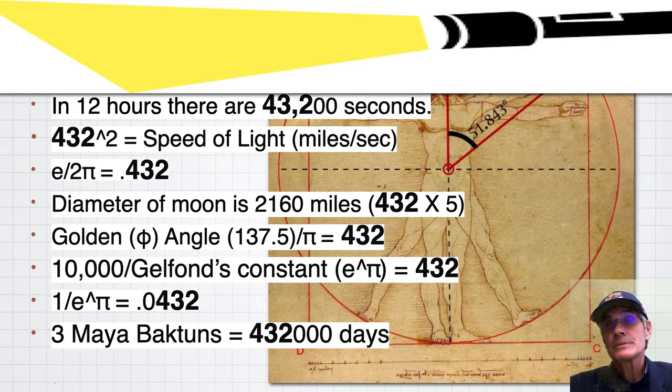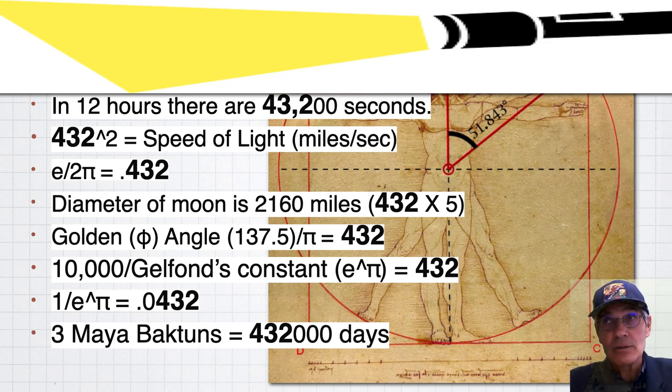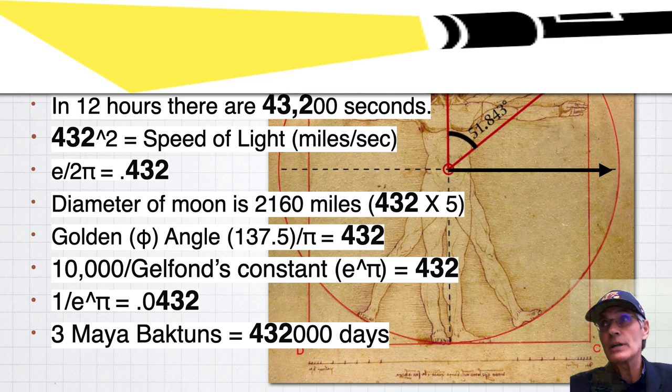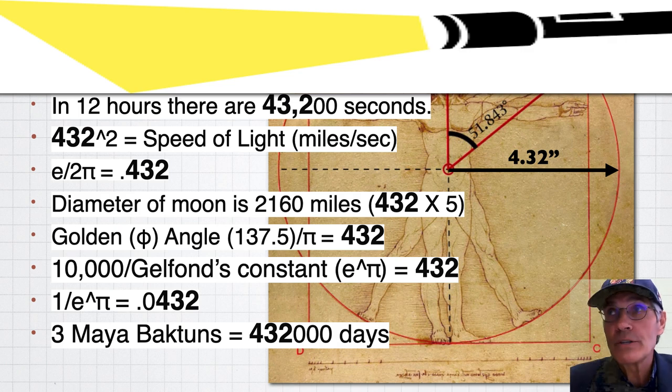Some incredible connections. Da Vinci, when he drew the Vitruvian Man, probably the single leading drawing in the world next to the Mona Lisa, has the Great Pyramid angle 51.843. And from the belly button to the circle in that famous drawing, it's 4.32 inches. Da Vinci chose that, I'm sure, on purpose.